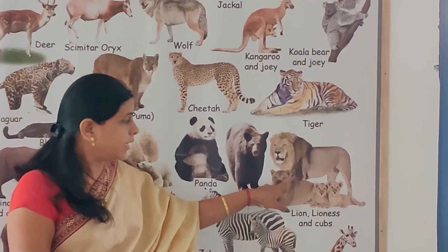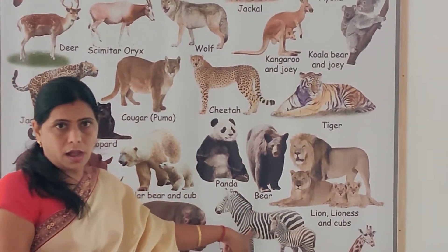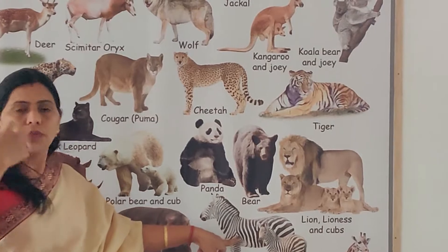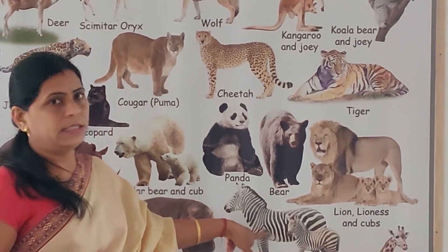Now, the next wild animal is zebra. It has stripes of black and white all over its body.